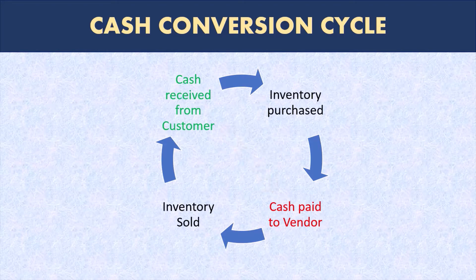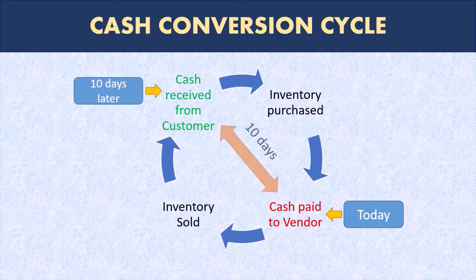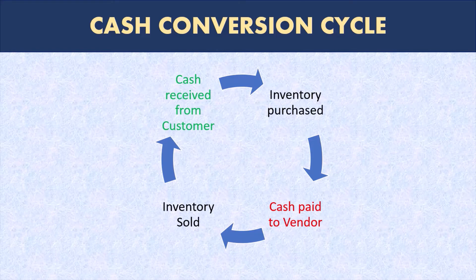So if your business buys inventory and pays for it today and sells and collects cash tomorrow, it means the cash conversion cycle of the business is one day. If it buys today and collects cash from customers in 10 days, the cash conversion cycle is 10 days. If your business collects cash from customers first and pays for the products later, then it has a negative cash conversion cycle.